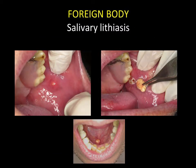This is a secondary foreign body with calcification in Stenson's excretory duct. It is a lithiasis, which often has a yellowish-white appearance. The most common site is Wharton's duct on the floor of the mouth, as shown in the bottom photo.